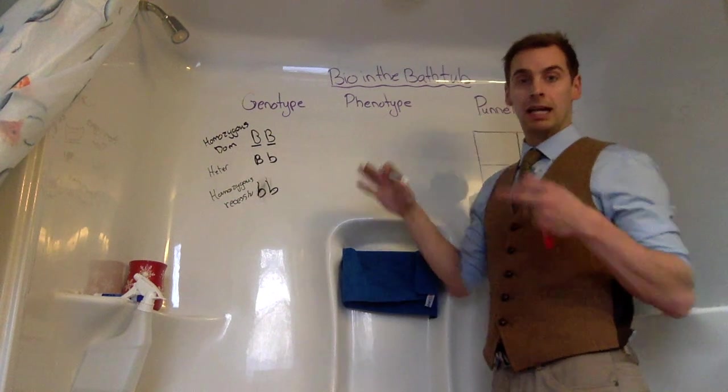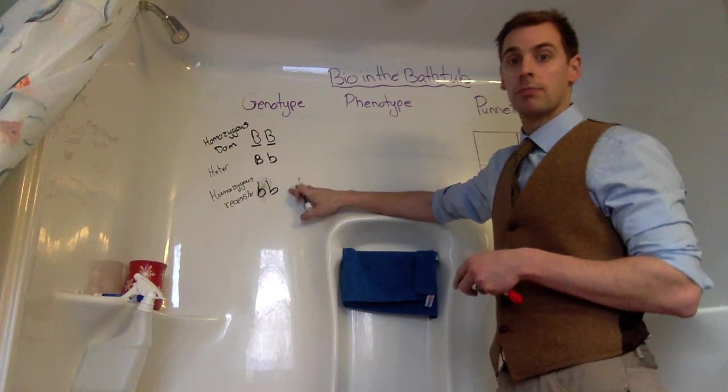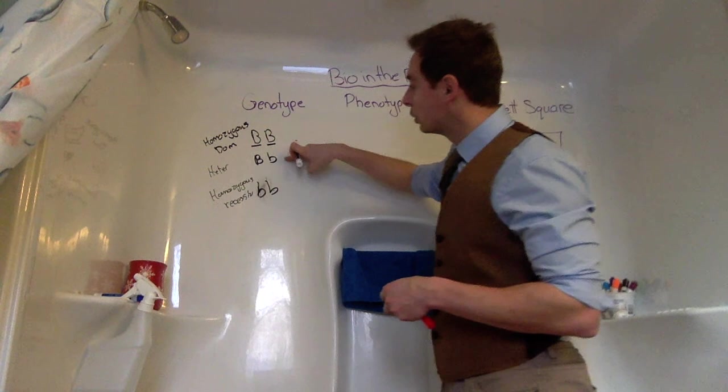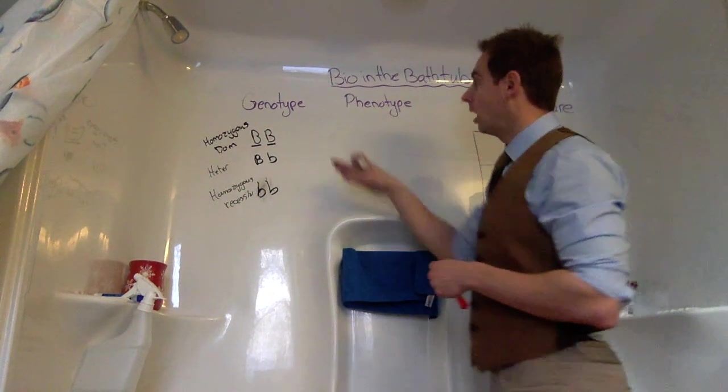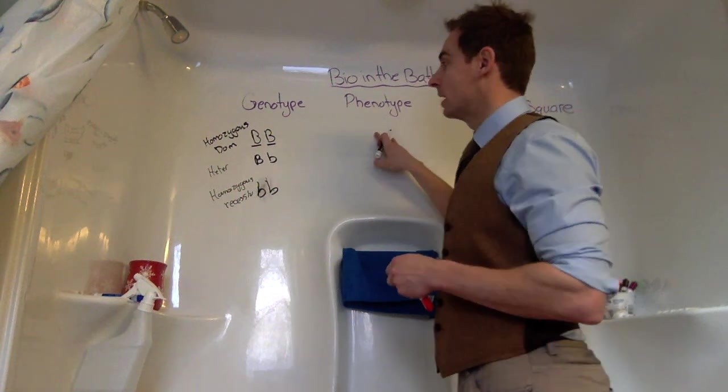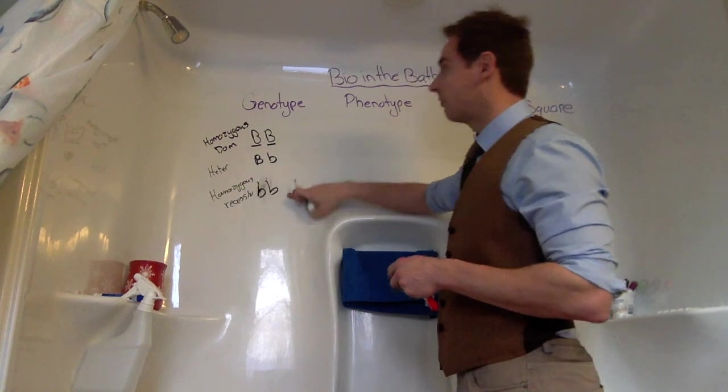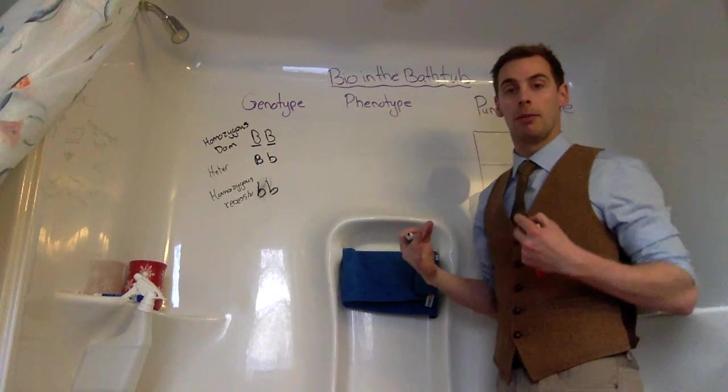We're not going to get into all the differences that will come with later videos, but genotypes tend to look like this when we're dealing with basic Mendelian genetics. But what the phenotype represents is what do these B stand for? What does B represent as the dominant trait?